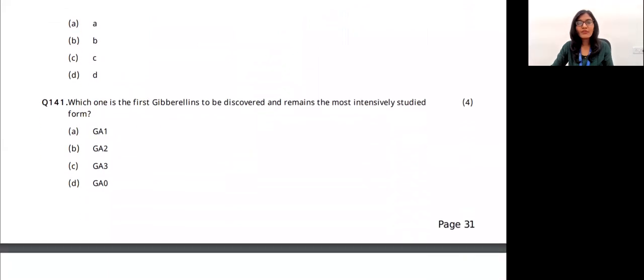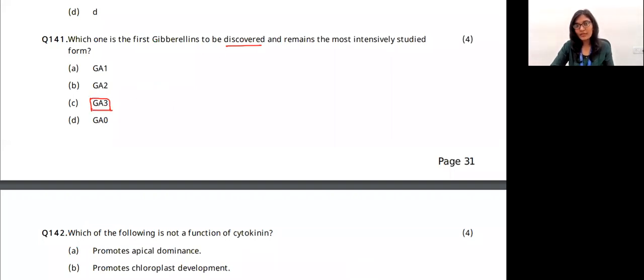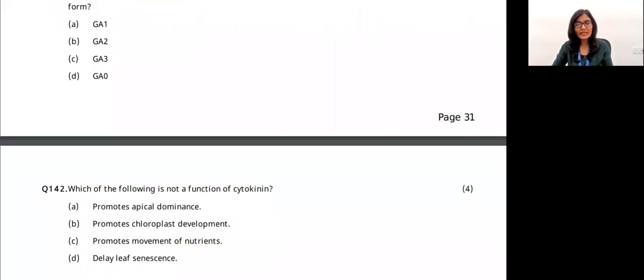Question 45: which gibberellin was first discovered? GA3 (gibberellic acid 3) was the first gibberellin to be discovered. The answer is option C.